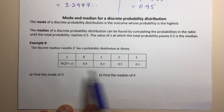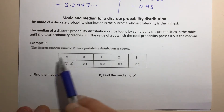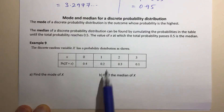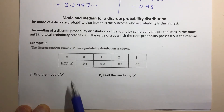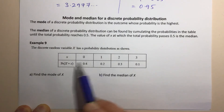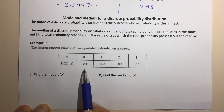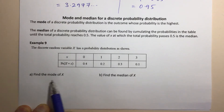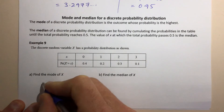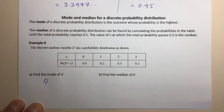Let's apply that in an example. The discrete random variable X has a probability distribution as shown in the table. Find the mode of X — we're looking for which value of X has the highest probability, and that's clearly X equals 0. So the mode of X is 0, because that's the one with the highest probability and the outcome most likely to occur.